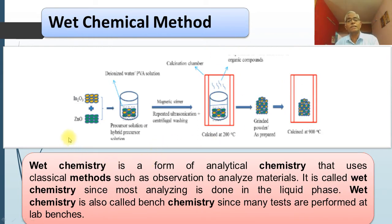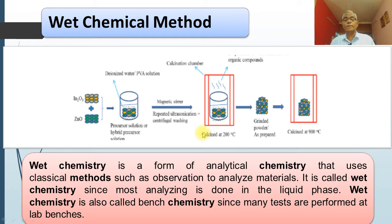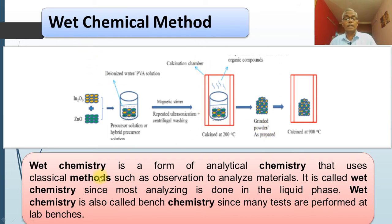The wet chemical method is a very simple method. We take the material we want to form into nanomaterials and mix them together. We prepare a precursor solution, sometimes with stirring. This solution is dissolved in ionized water — maybe double or triple deionized water — or sometimes a PVA (polyvinyl acetate) solution is used. After mixing, the material is dried at varying temperatures so that the organic product is formed, then ground, and if required, finally calcinated. This method is sometimes called bench chemistry because it can be performed on a laboratory bench.